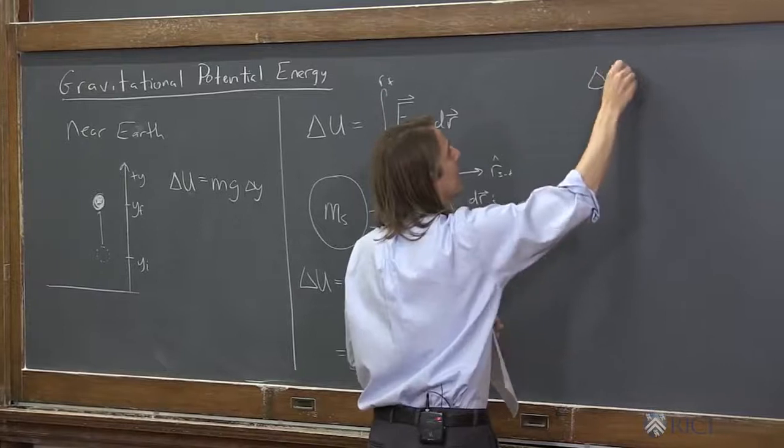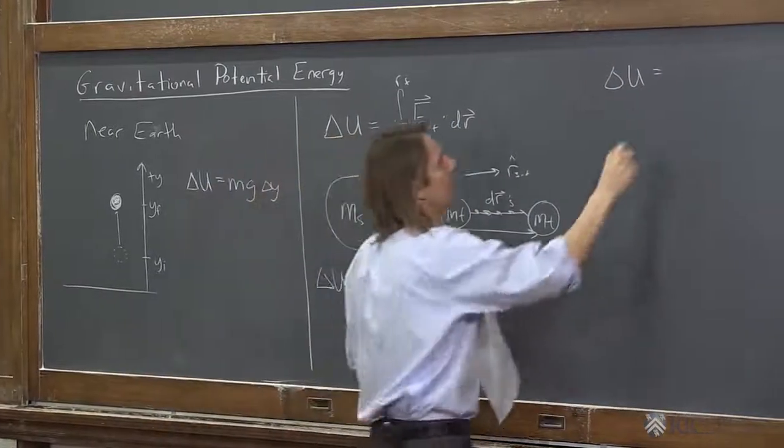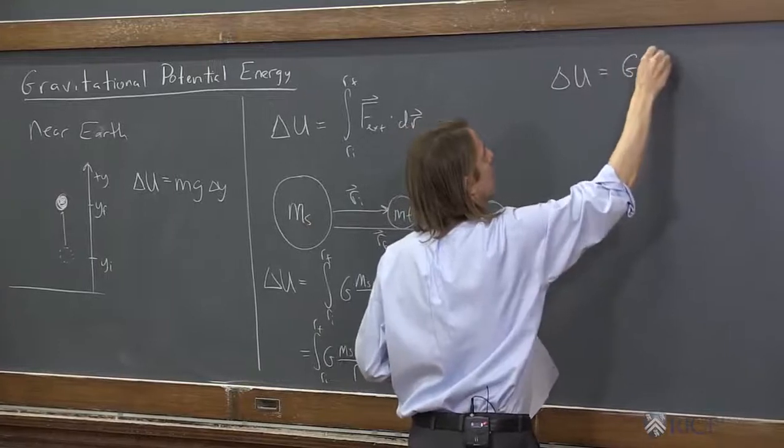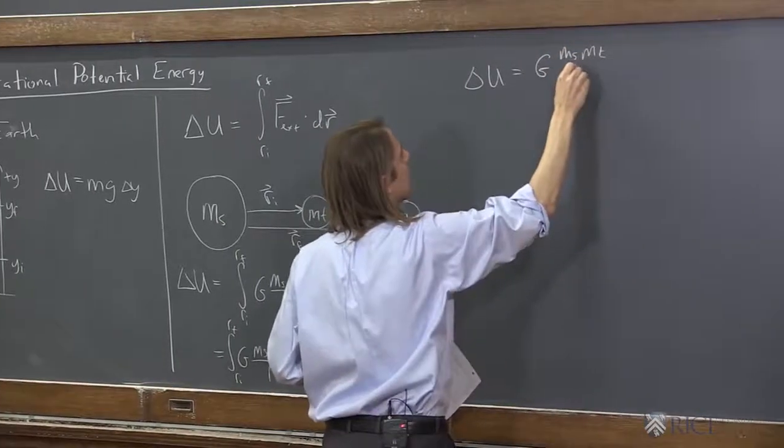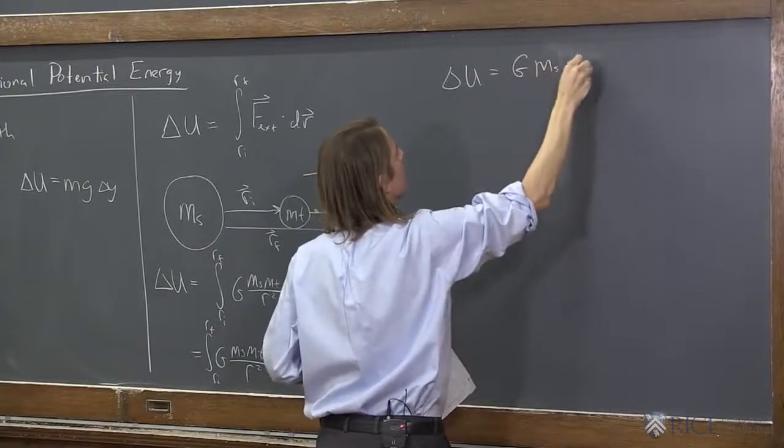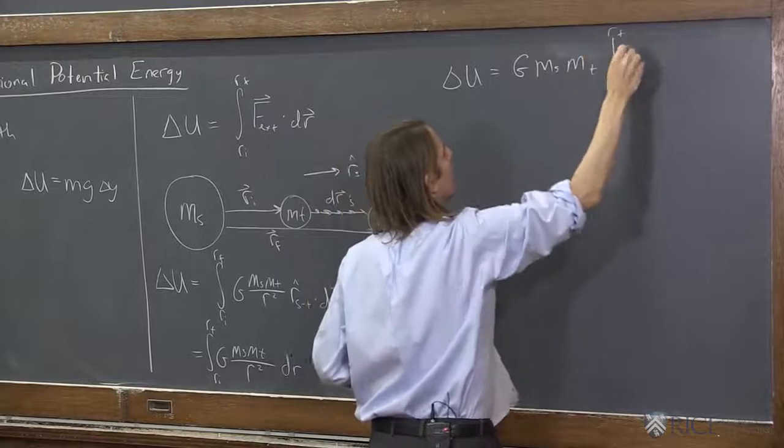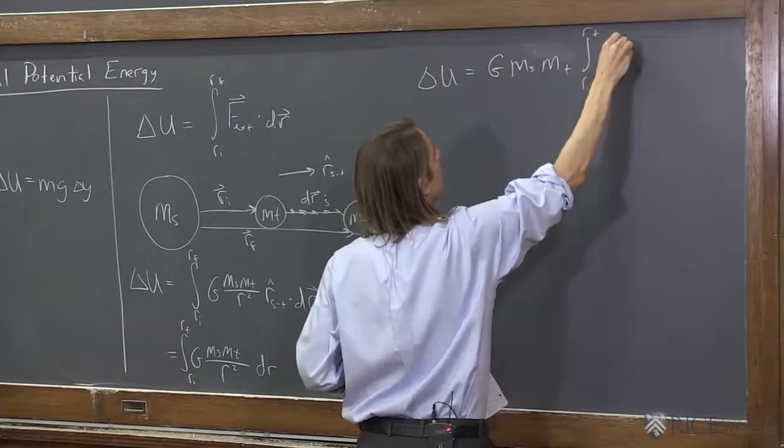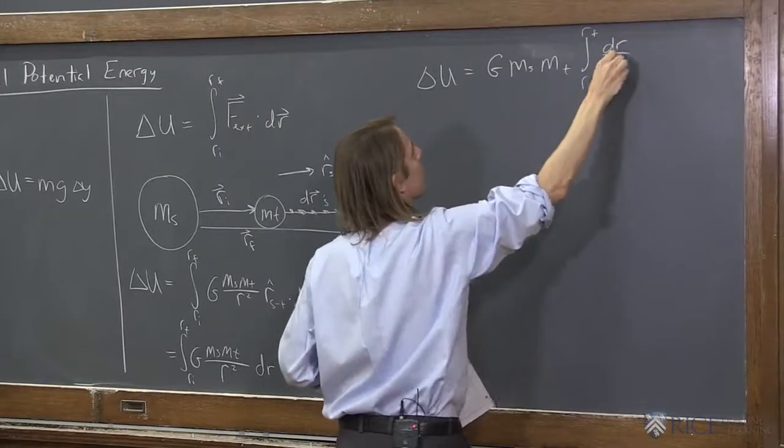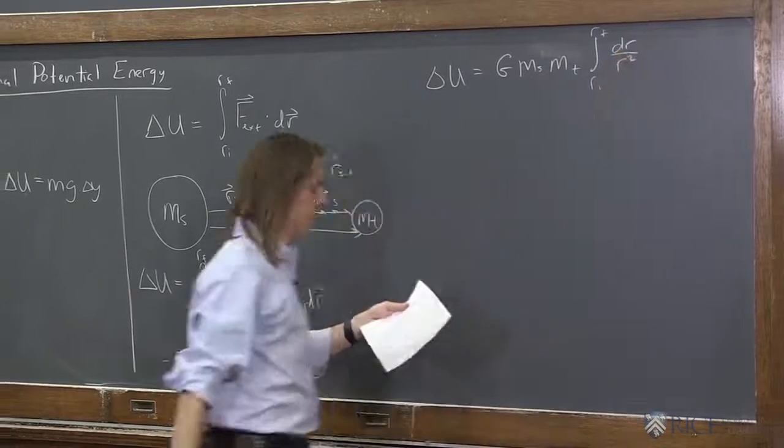Let's pull out the constants: G m source m test, integral from ri to rf of dr over r squared.